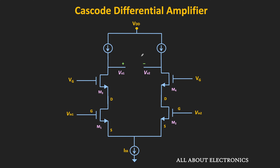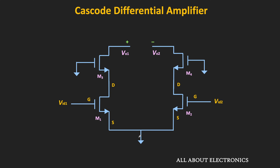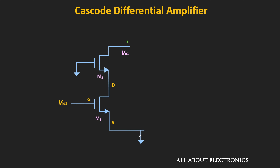By using the cascode differential amplifier, the gain of this differential amplifier can be increased further. This is the cascode differential amplifier, where once again the current source is used as a load. For the time being, let's assume this current source is ideal. We are assuming that M1 and M2 are identical, and likewise M3 and M4 are also identical. To find the differential gain, let's do the small signal analysis. We replace all DC sources by short circuits, the current source acts as an open circuit, and this node acts as a virtual ground. Since the circuit is symmetric, we can use the half differential circuit to find the differential gain.